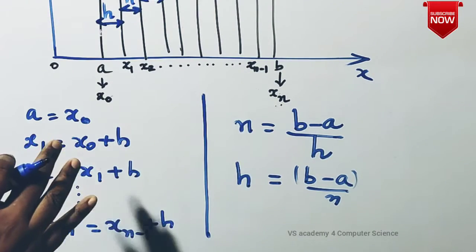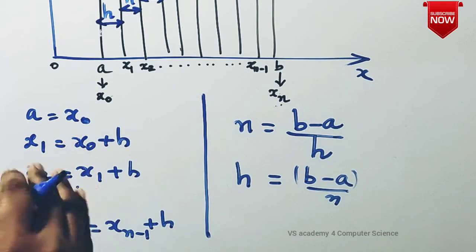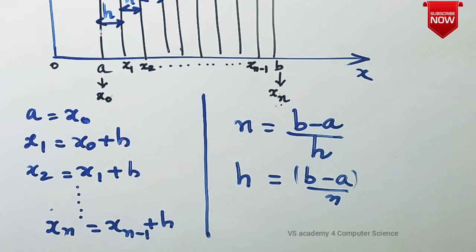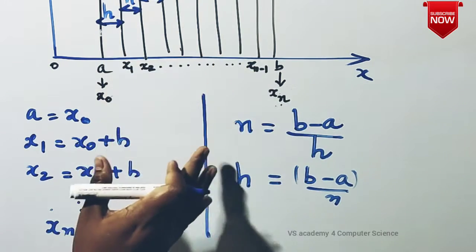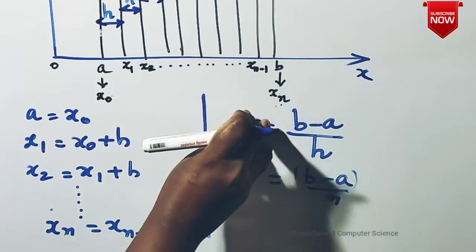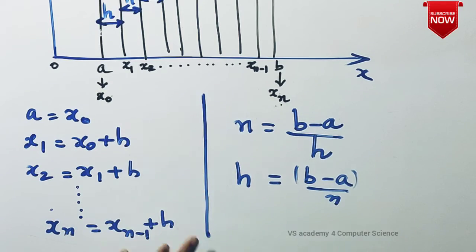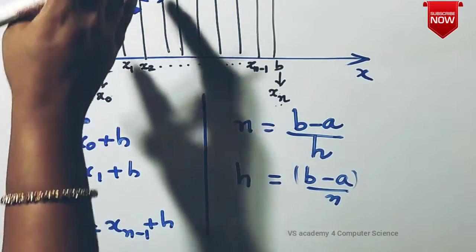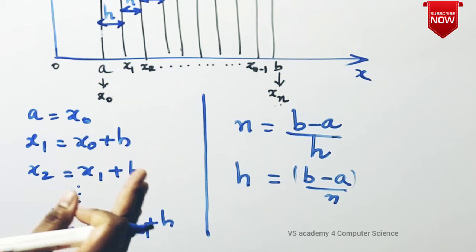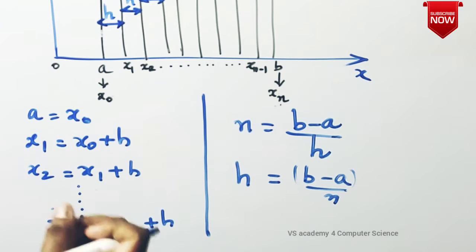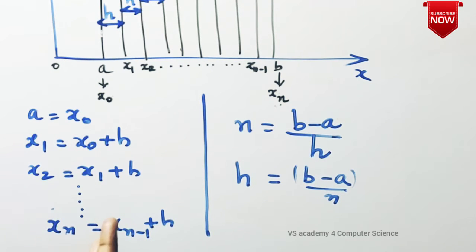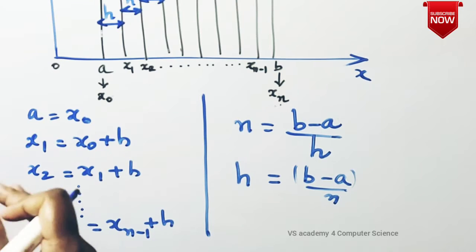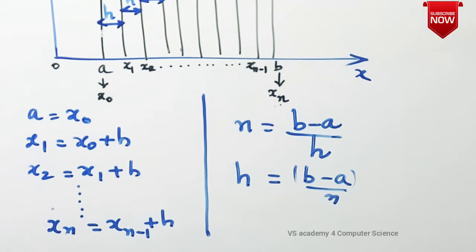Numerical integration has three types, or three to four numerical integration techniques. The three methods we commonly learn are: the Trapezoidal rule, Simpson's one-third rule, and Simpson's three-eighth rule. In these three methods we commonly learn numerical integration.